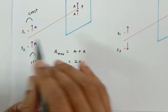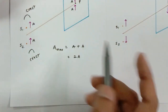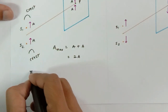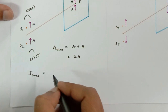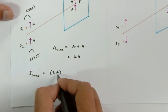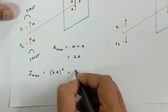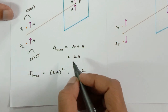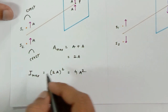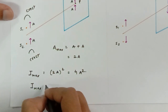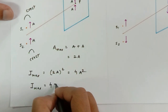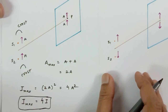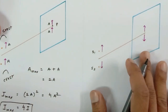Remember, intensity is the square of amplitude — intensity shall be calculated by no other means. So intensity at point P, when crest falls on crest or trough falls on trough, would be maximum. Intensity equals the square of amplitude, so (2a)² = 4a². Since a² is the intensity of one wave, maximum intensity is four times the intensity of one wave.